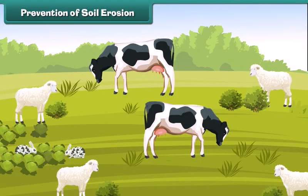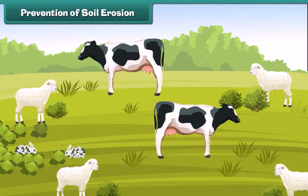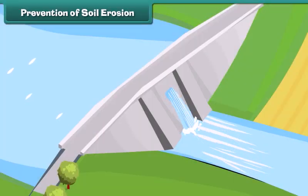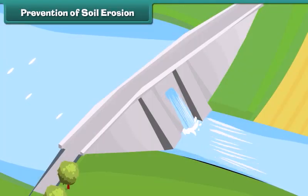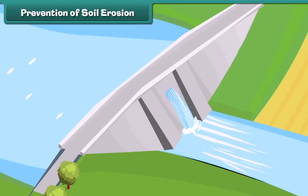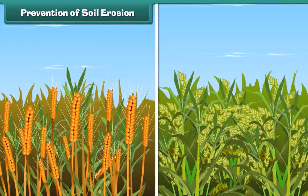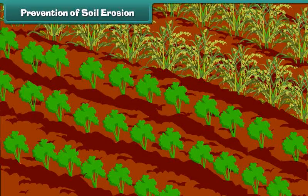Controlling overgrazing of land by animals also helps control soil erosion. Building dams controls soil loss. Some modern techniques of farming should be practiced — for example, different types of crops should be grown at different times on the same land, and different types of crops should be grown in alternate rows in the same land.